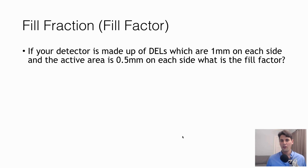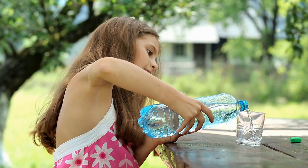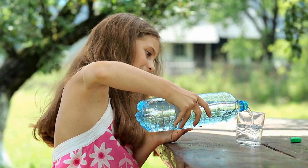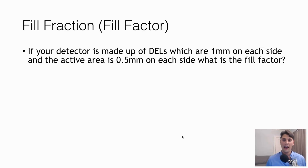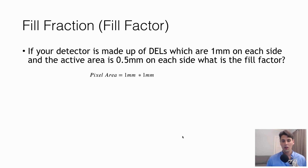Imagine your fill factor example: in each direction you have a 1 millimeter by 1 millimeter area for the detector element, and then you have a 0.5 millimeter by 0.5 millimeter active area. What's the fill factor? We need to calculate the pixel area and the active area, then use their ratio to figure out the fill factor.